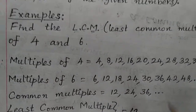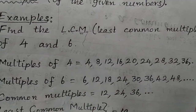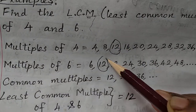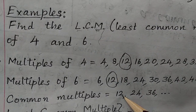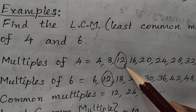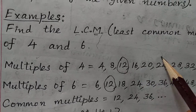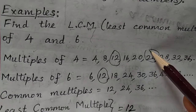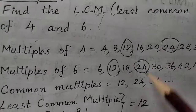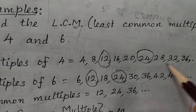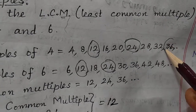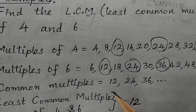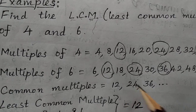Now we have found multiples of 4 and 6. What are the common multiples of 4 and 6? 12 is a multiple of 4 and 12 is a multiple of 6. So the first common multiple of 4 and 6 is 12. The second common multiple will be 12 plus 12 = 24. 24 is a multiple of both 4 and 6. Then 24 plus 12 = 36, which is also a multiple of both. Common multiples start with 12 and they are increasing by 12.